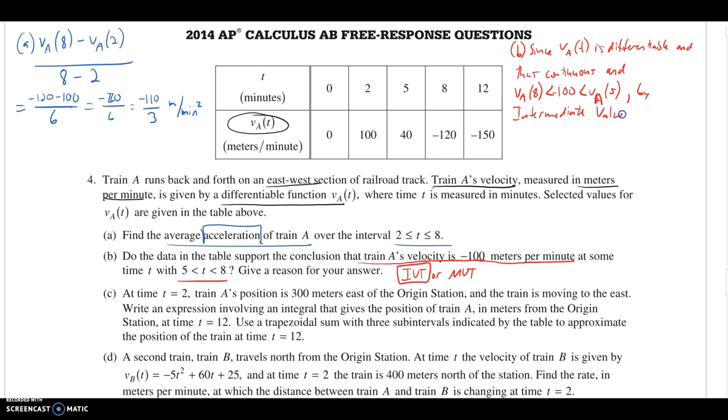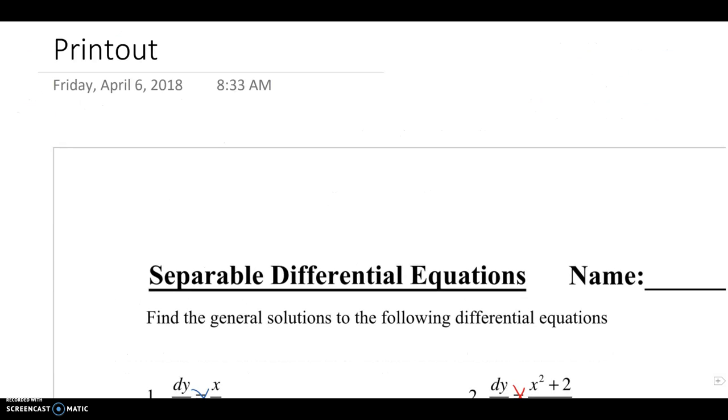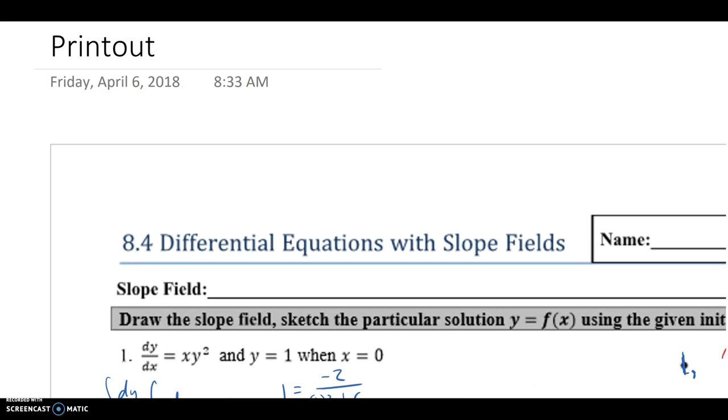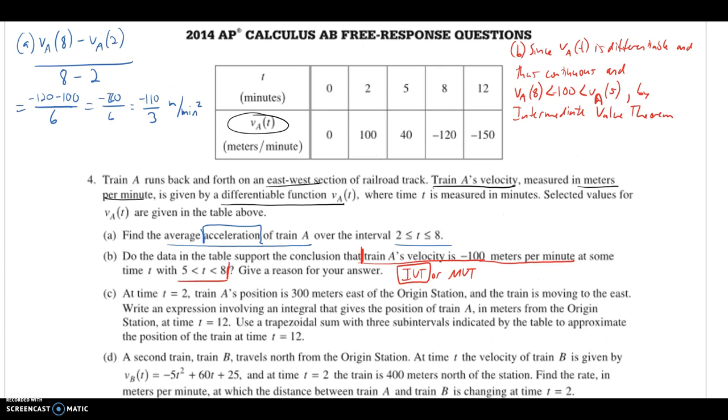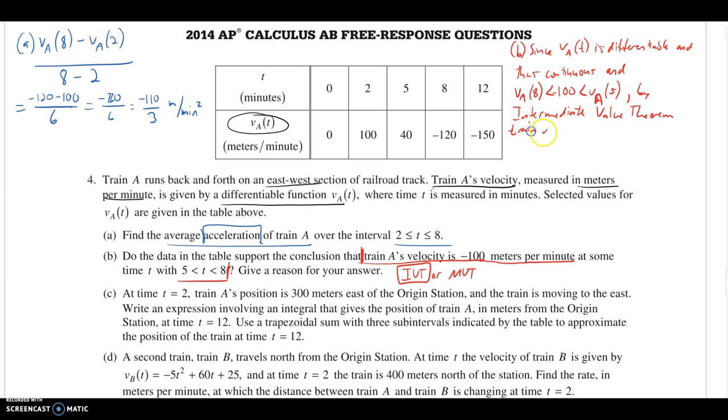And then we call on the intermediate value theorem. We have to have that theorem's name in our answer to this problem. By intermediate value theorem, we just take kind of from right here where they started mentioning train A to the end of the question, and we just repeat that little section back. By intermediate value theorem, train A's velocity is negative 100 meters per minute at some time T with T being between 5 and 8. That would be a good complete answer to this one. Nothing in terms of calculation. It was identifying IVT and then moving straight into conditions and getting a good explanation for your answer.